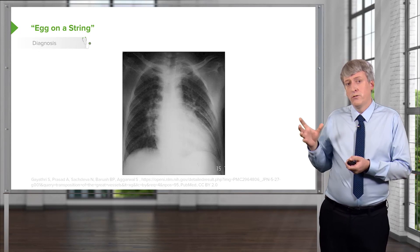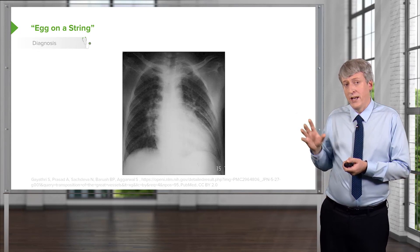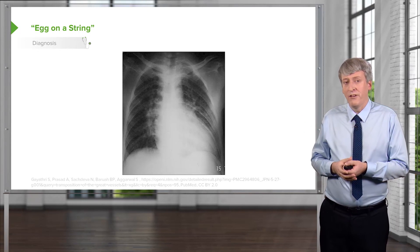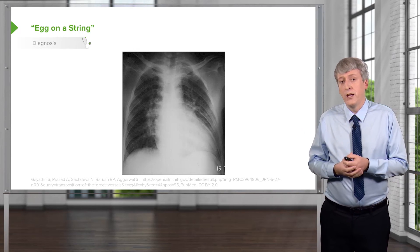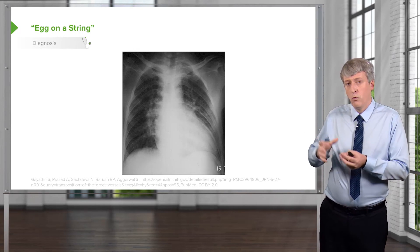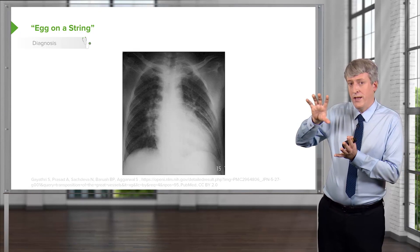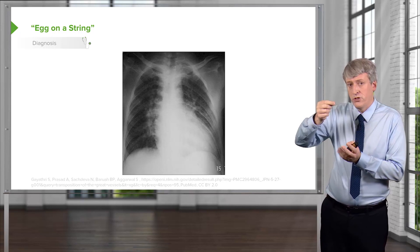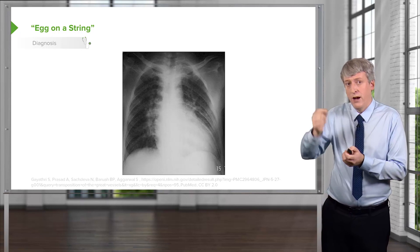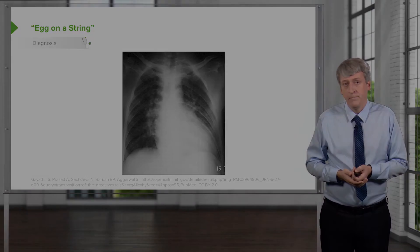On x-ray, this patient will have a classic egg-on-a-string appearance — it looks like a sideways egg floating underneath a string, with a very narrow mediastinum.